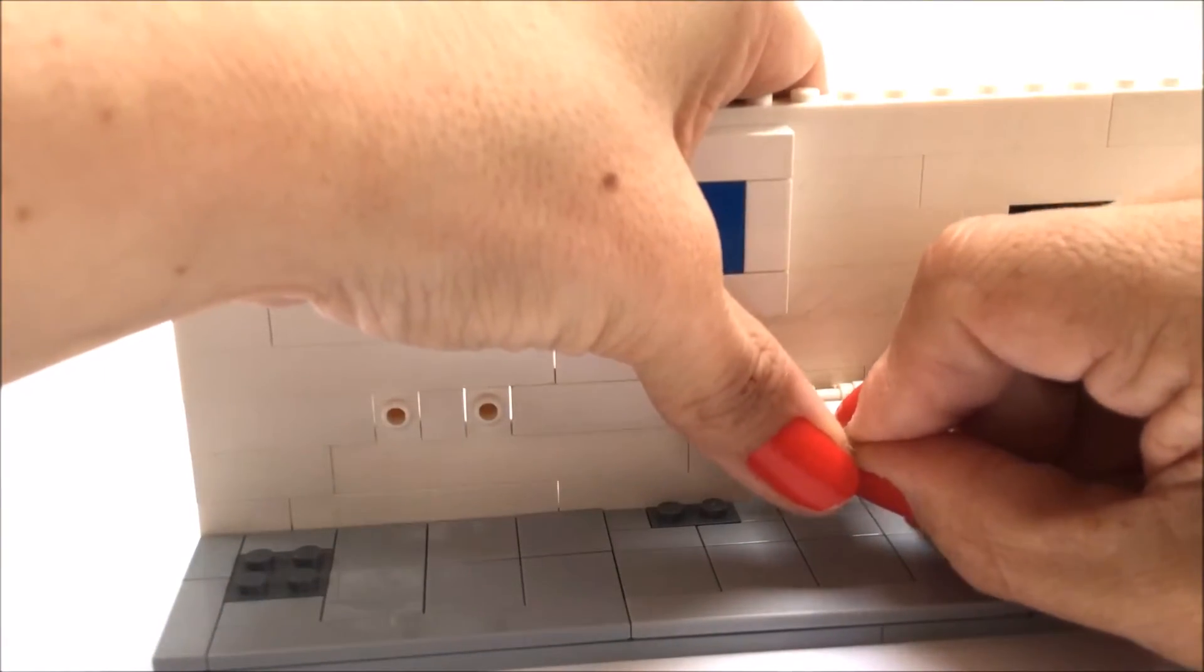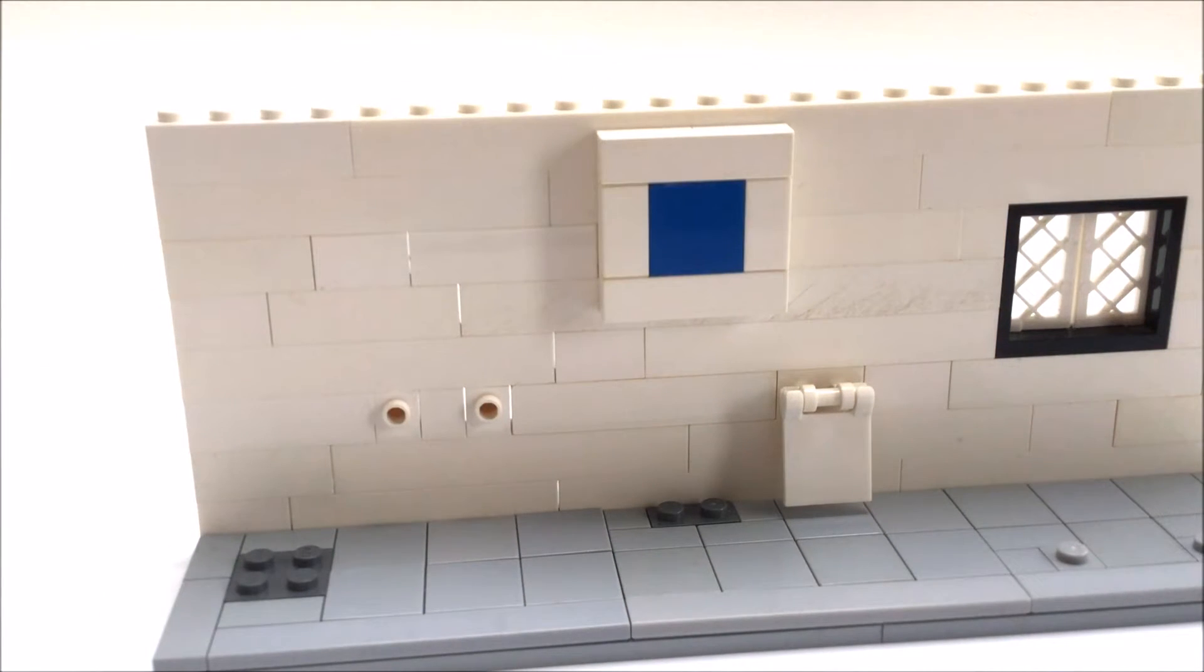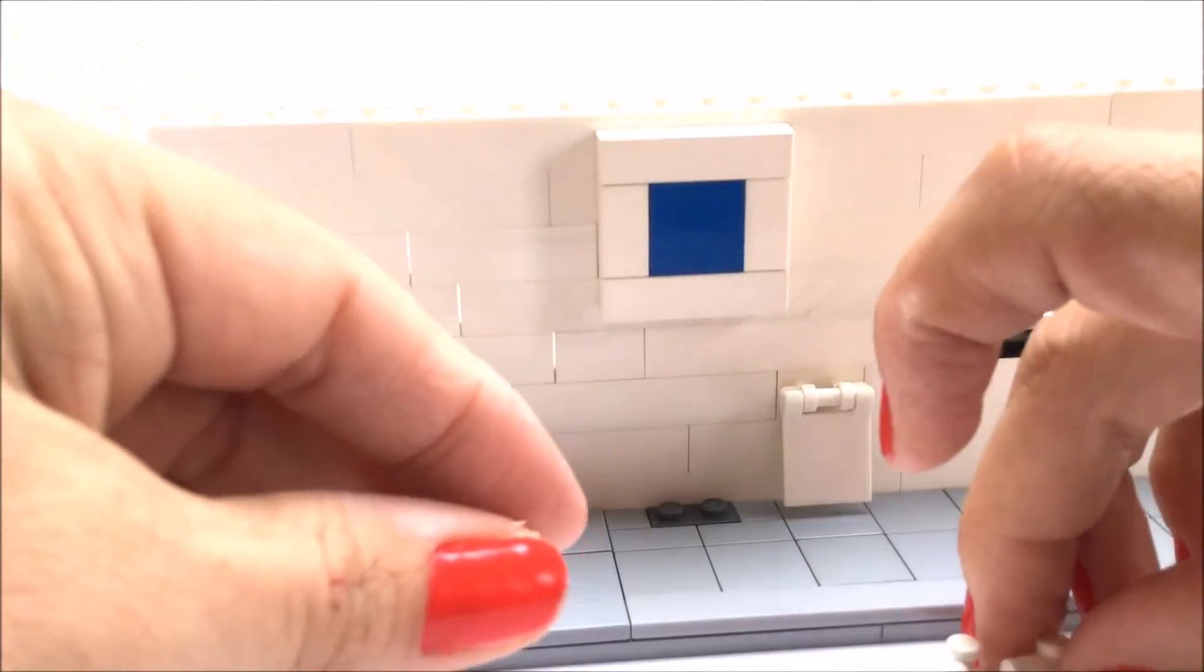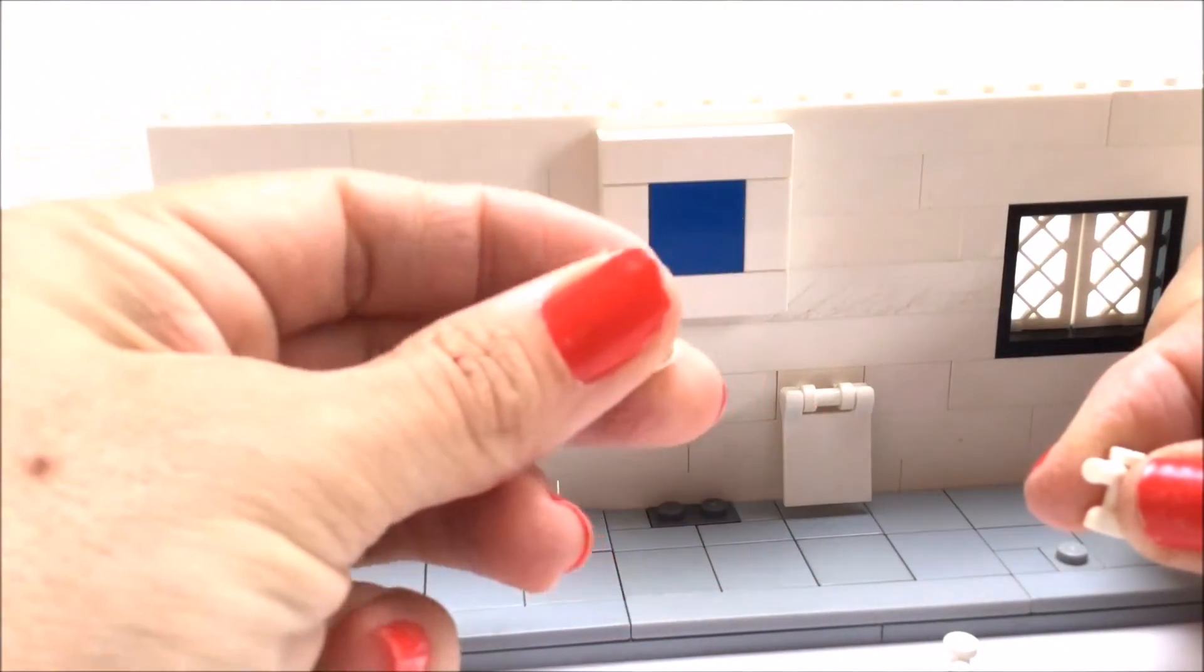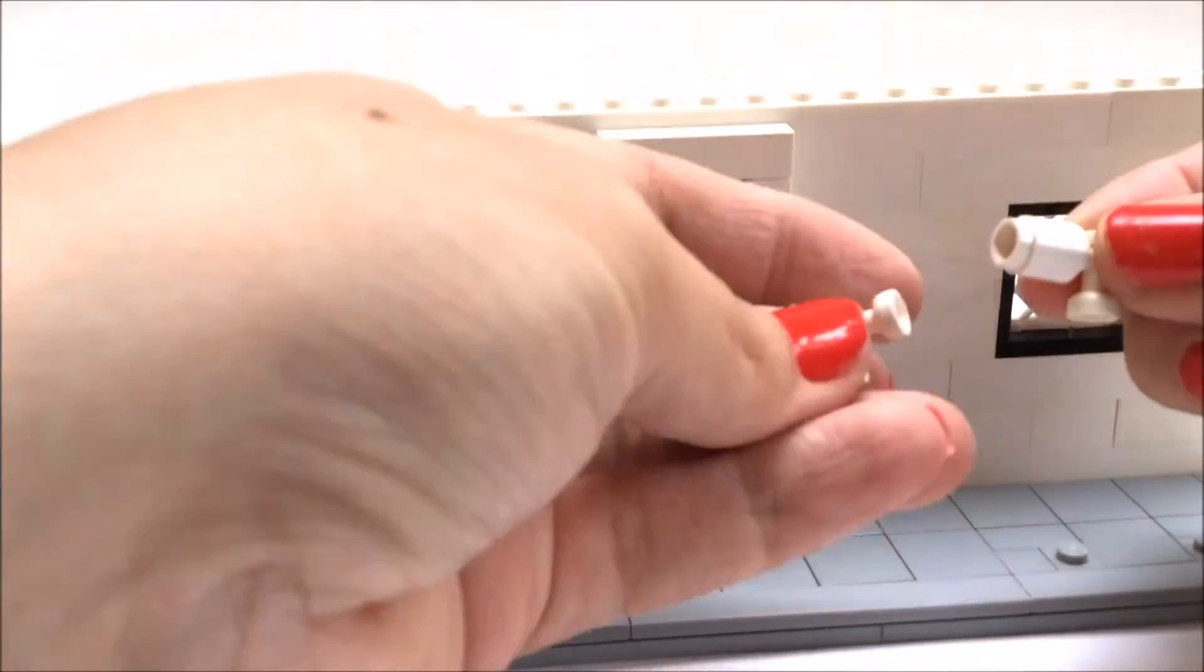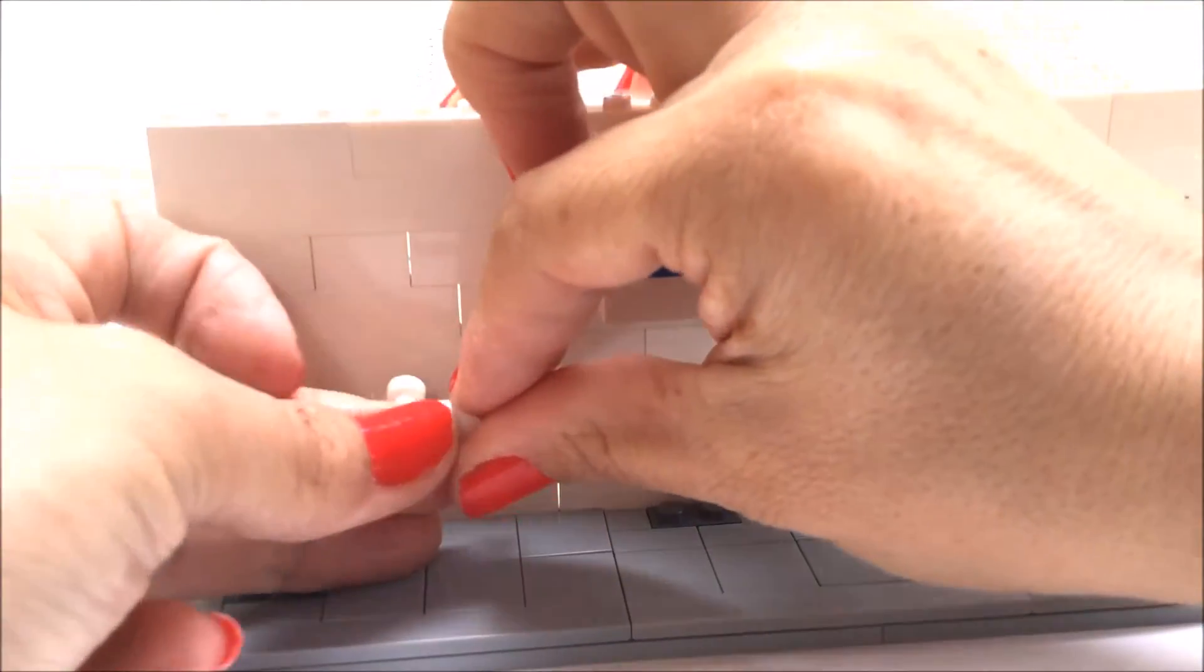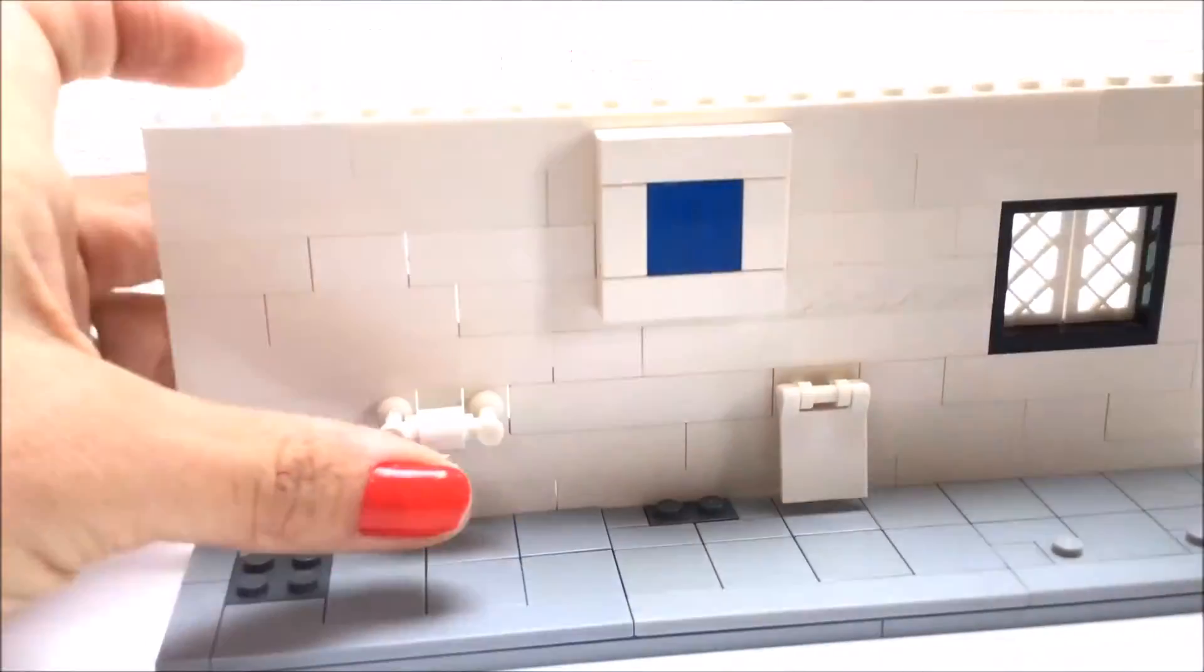Then we're going to create a toilet roll and toilet roll holder by using two of these taps and a cylinder brick. Now we slot the tap onto the end of the cylinder and onto the other end, and then this is a bit fiddly but we're just going to attach it onto the wall where we had our knob bricks there.